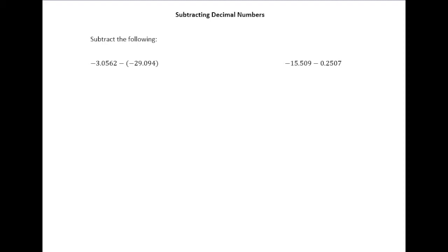So I want to take negative 3.0562 minus negative 29.094. So remember the strategy here is if I see a minus sign and it's not just the simple situation of a big positive number minus a smaller positive number...